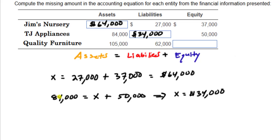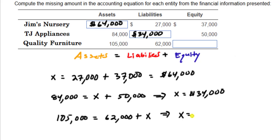The rest Quality Furniture has for itself. $105,000 of assets equals $62,000 worth of liabilities plus equity. We don't know equity, so that's X. Solve for X: $105,000 minus $62,000 equals $43,000. Quality Furniture at this moment in time has $43,000 worth of equity.